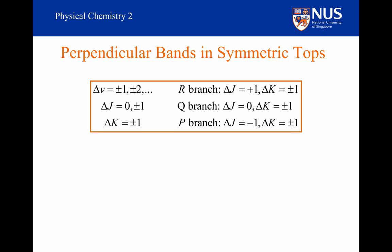So for perpendicular bands and symmetric tops, delta V is equal to plus or minus 1 or plus or minus 2, etc. For the R branch, delta J is equal to plus 1 and delta K is equal to plus or minus 1. This is where the issue comes from. Before, we could ignore this. For the Q branch, delta J is equal to plus or minus 1. And again, for the P branch, delta J is equal to minus 1 and delta K is equal to plus or minus 1.